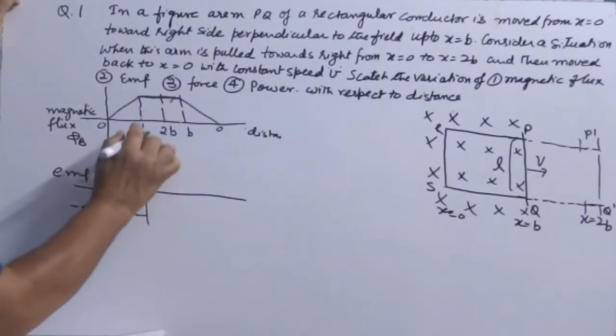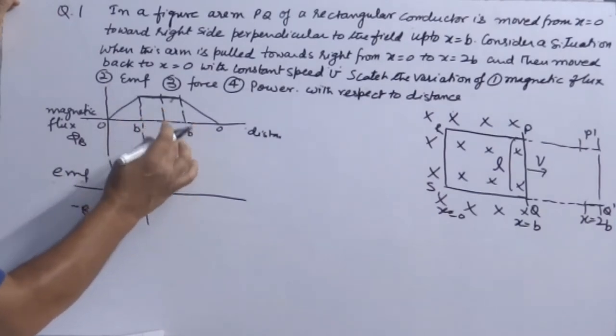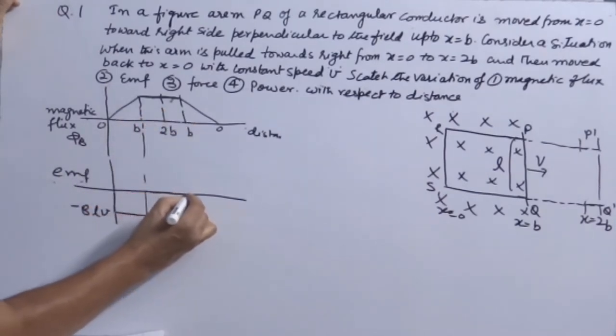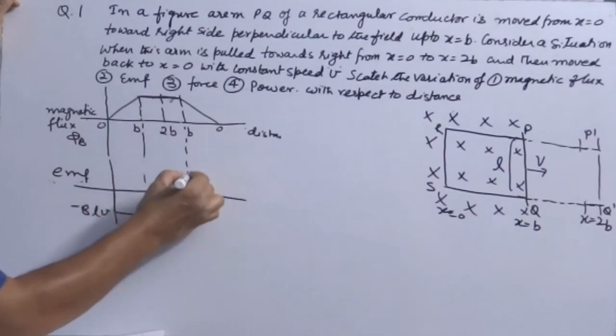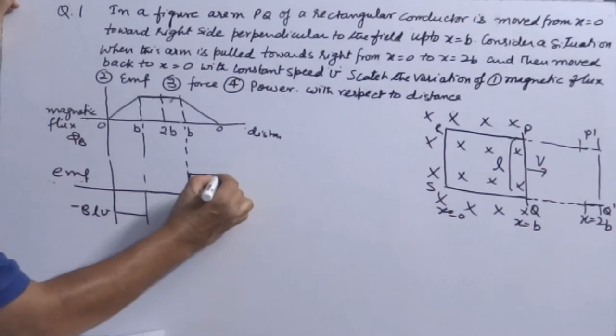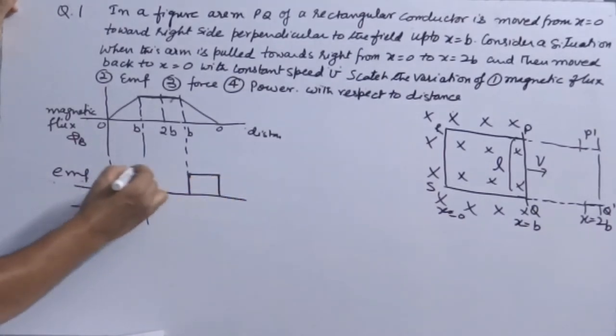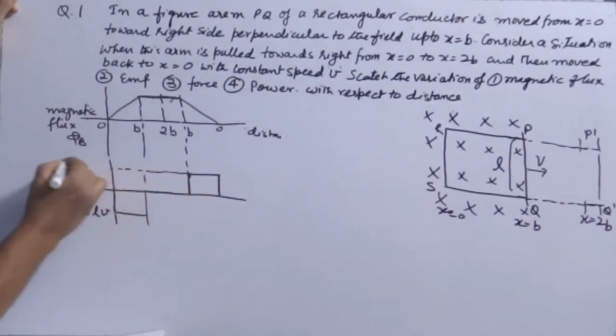Then in between B to this B back, it remains 0 here, and then again it jumps up in positive direction, and this value will be BLV positive. Same graph will be for force, because force is also varying according to the same factor.